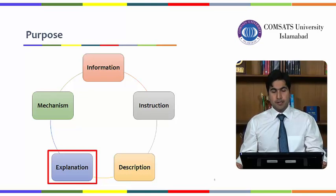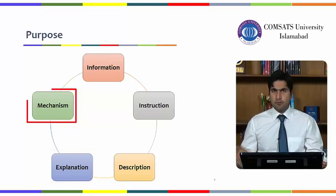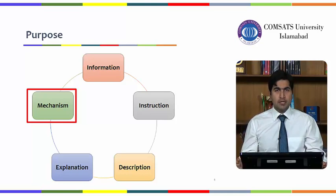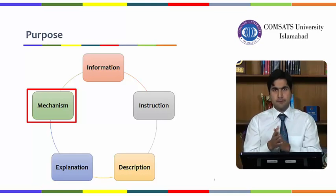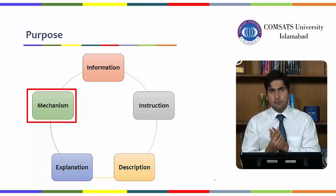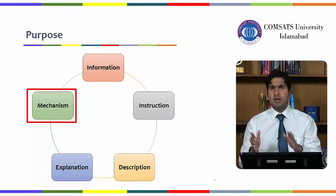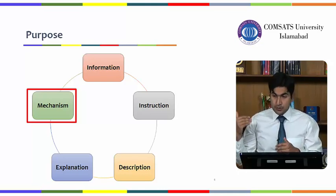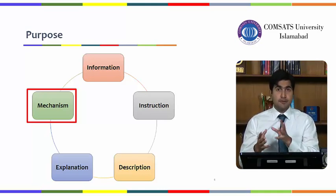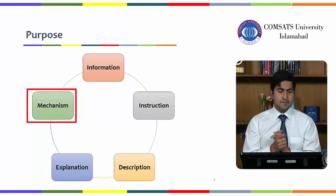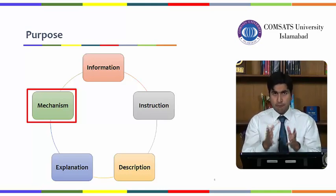The fifth purpose is providing a mechanism. If there is a new tool, appliance, or machine and you don't know how to use it, you look for a manual. That manual or guidebook basically serves the role of a report — because you are getting all the points with respect to the mechanism of using that tool or appliance. All information about the utility of that tool, called the mechanism, is provided in the form of a report.